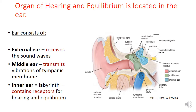The ear consists of three parts. External ear, which is responsible for reception of sound waves. Middle ear, transmitting sound waves in vibration of fluid in cochlea. And internal ear, in which vibrations of perilymph are transformed to the nerve impulse.